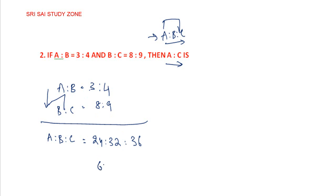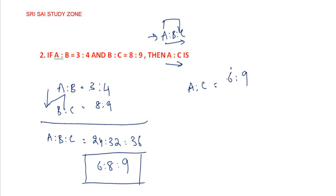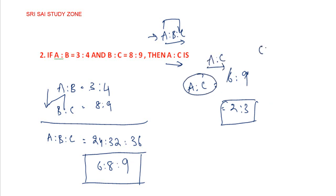The answer is 2 is to 3. If you have the question: a is to c and a is to a, what is the answer? a is to c is 2 is to 3. c is to a is 3 is to 2.